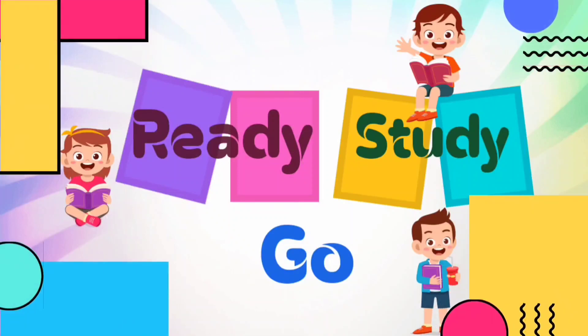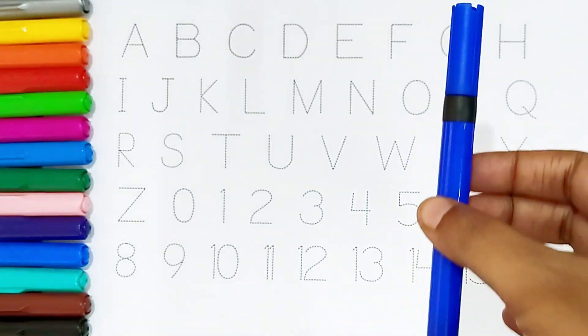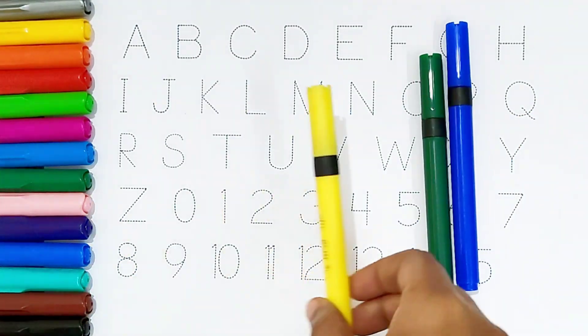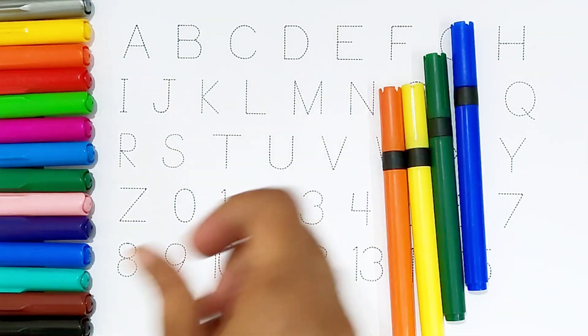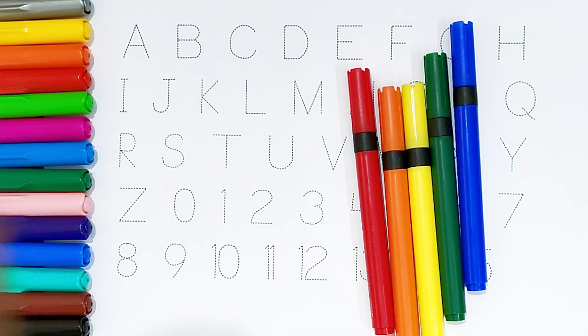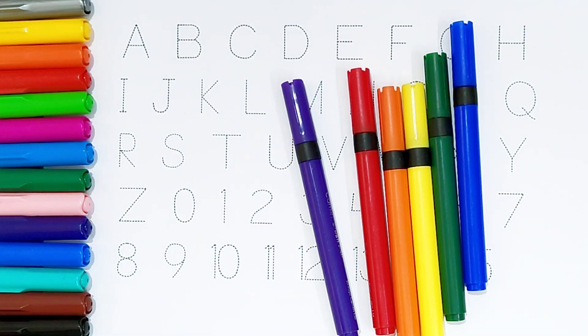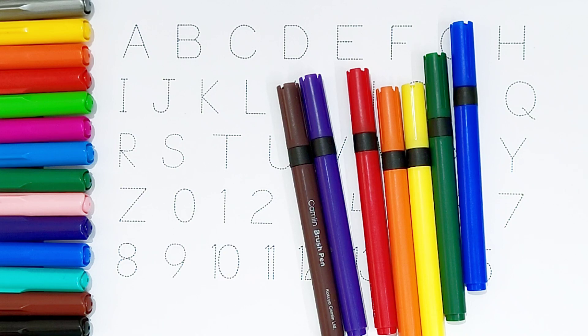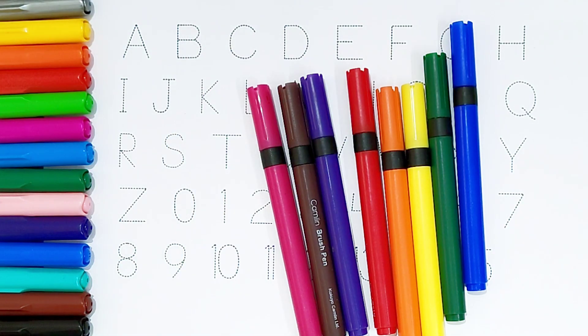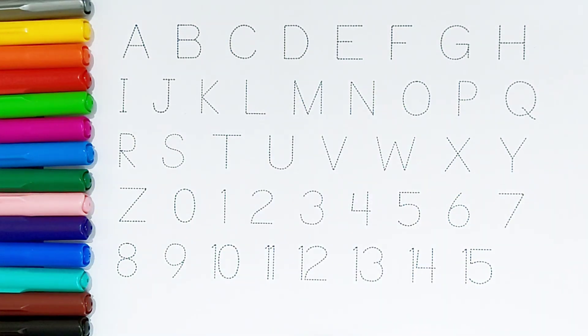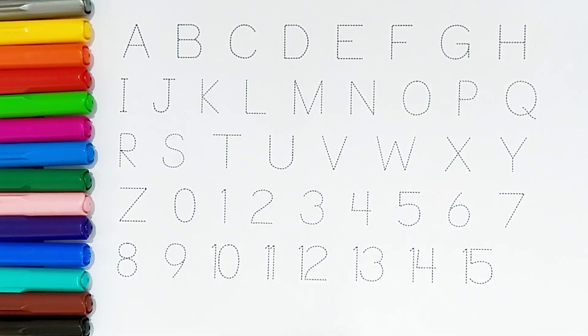Ready, study, go! Blue color, green color, yellow color, orange color, red color, violet color, brown color, pink color. Hi kids, today we can learn the alphabets from A to Z and numbers 1 to 15. Let's begin!